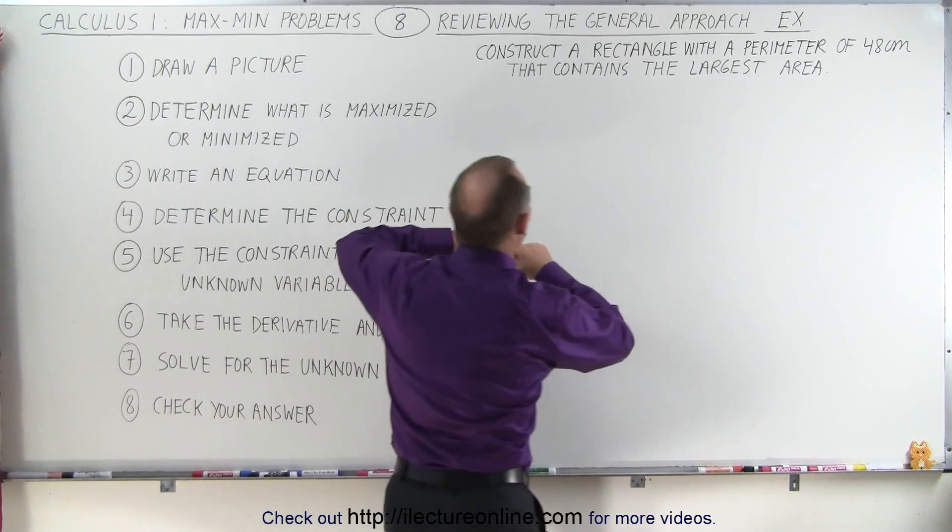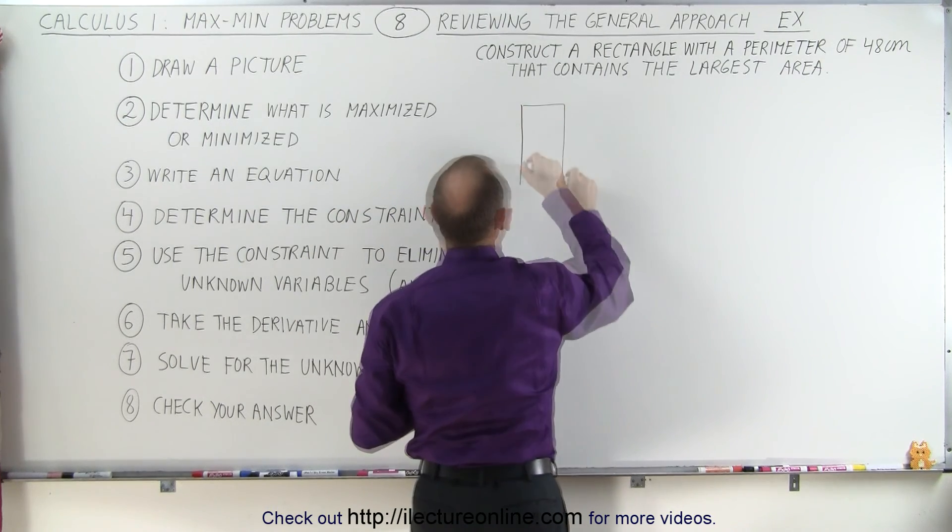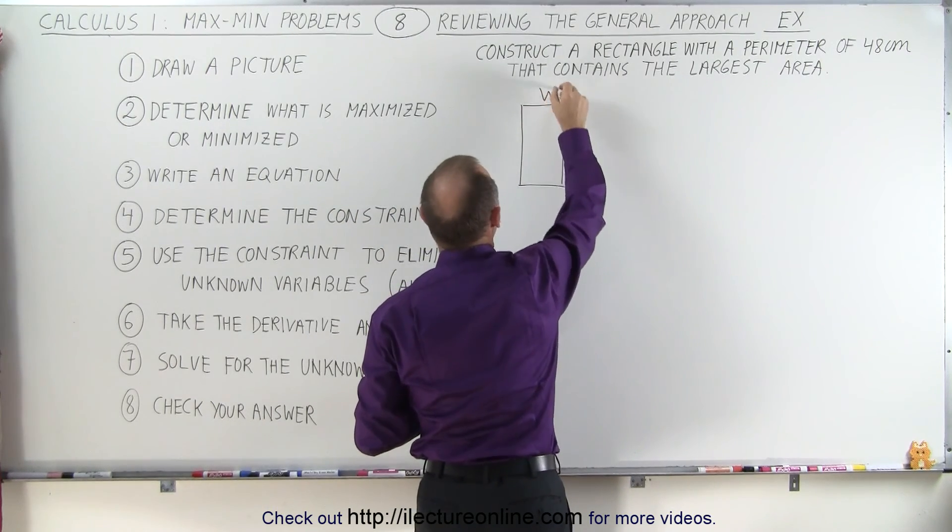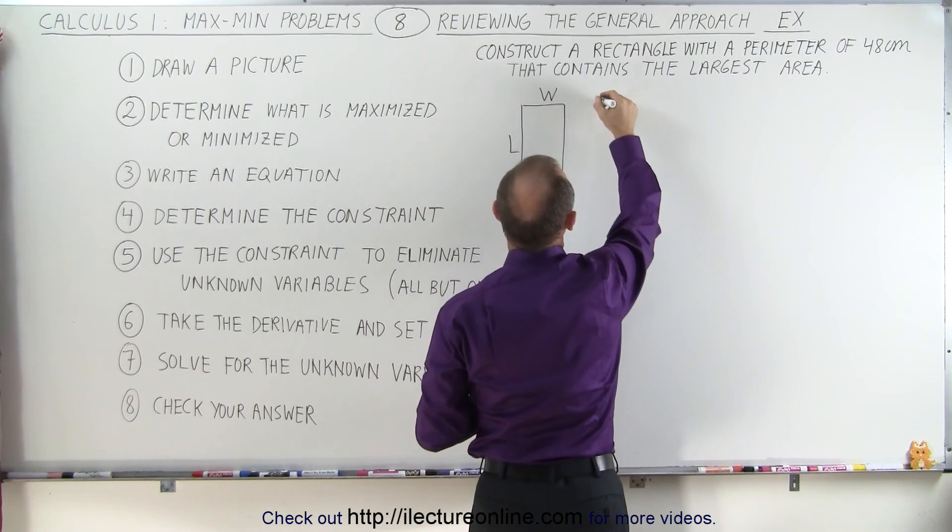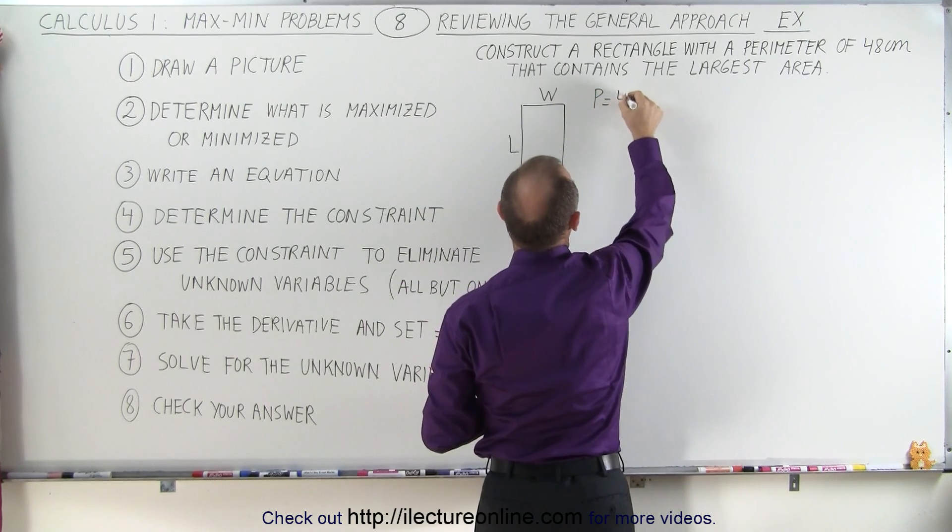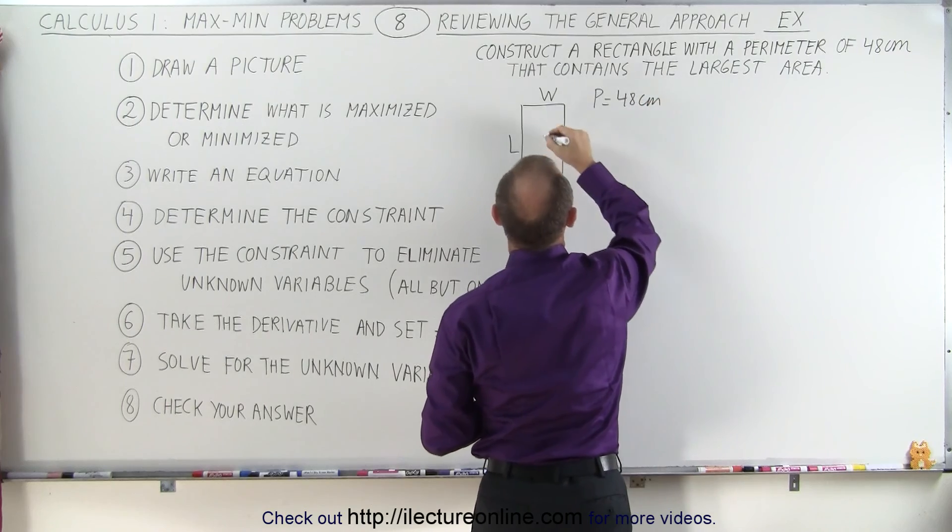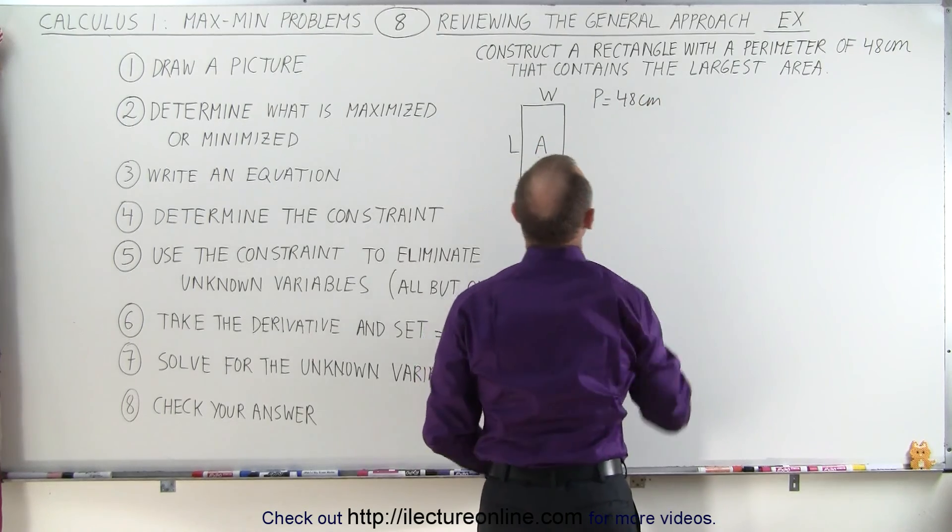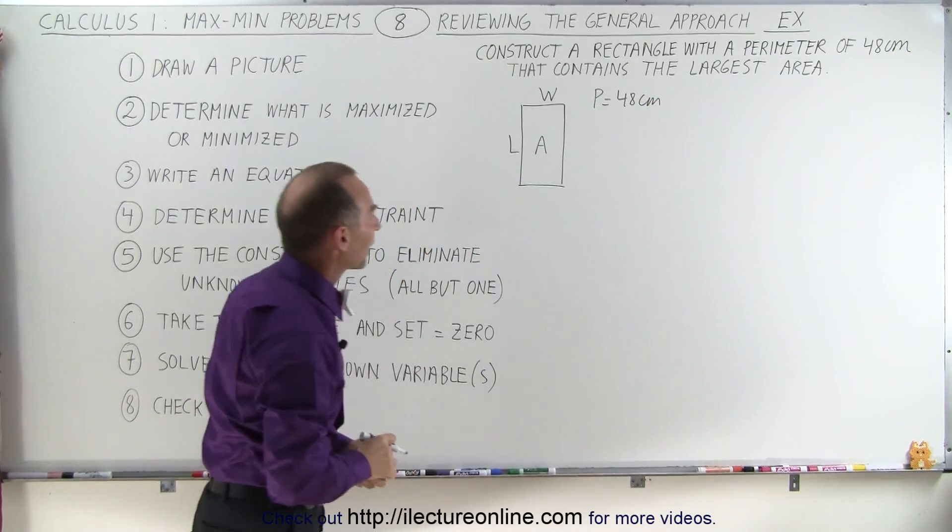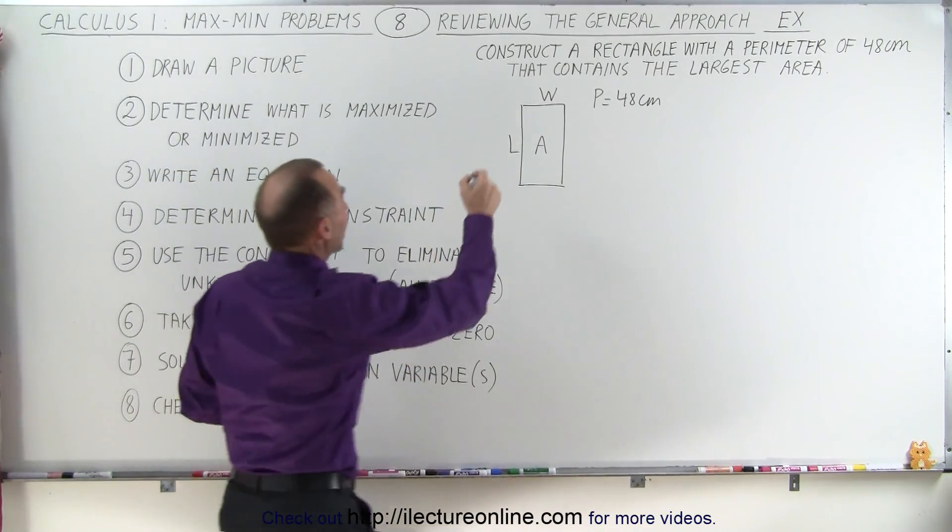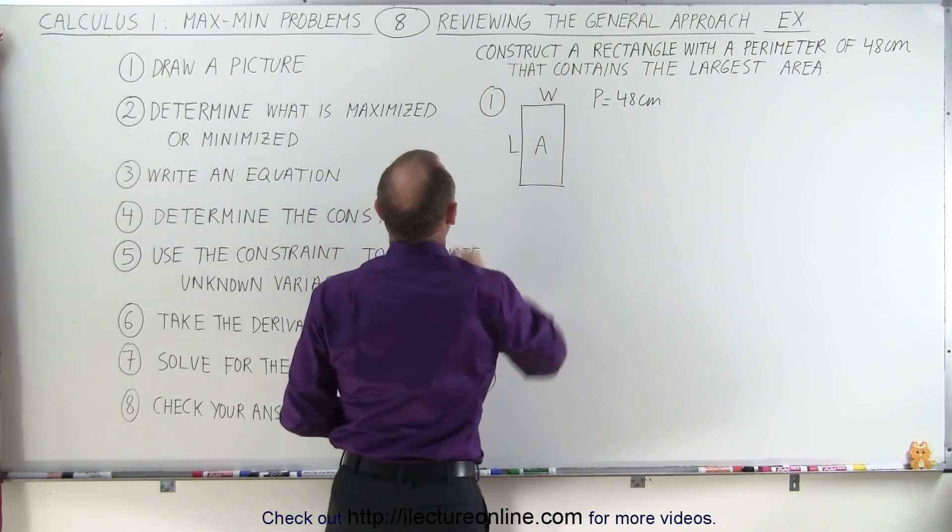So we'll draw a picture of a rectangle. The rectangle has width and length, and they tell us that the perimeter is 48 centimeters, and then of course we need to find the maximum area. That's step one, we draw a picture of what the problem tells us to do.